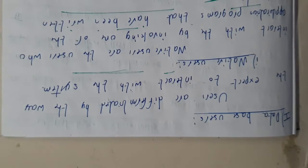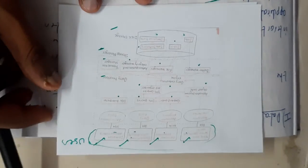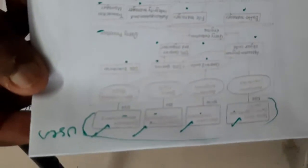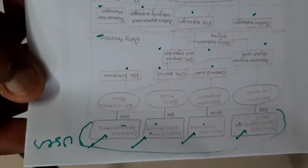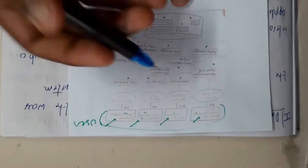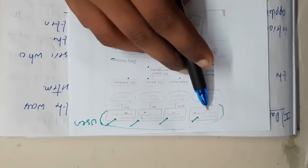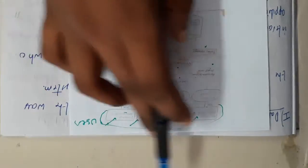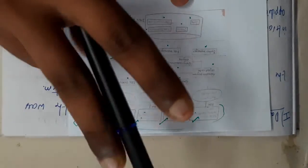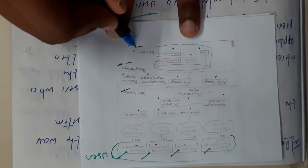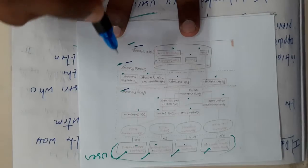Hello guys, we are back with our next tutorial. In this tutorial, let us go through database design. The image is not so clear, so I'll be reading — just open the PDF or go to Google and type 'database design' to find photos. The first upper layer will be the users, second will be the query processor, third will be your storage, and fourth will be your disk storage.